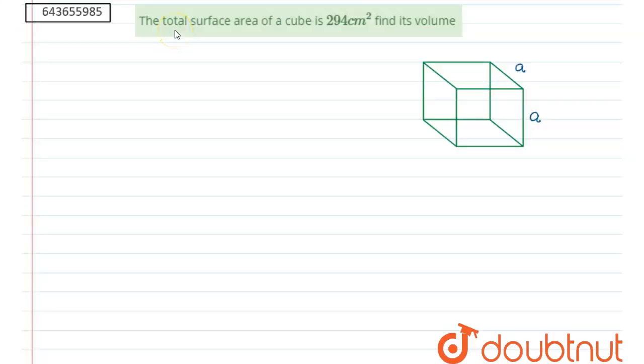Hello everyone, question is: the total surface area of a cube is 294 cm², then find its volume.